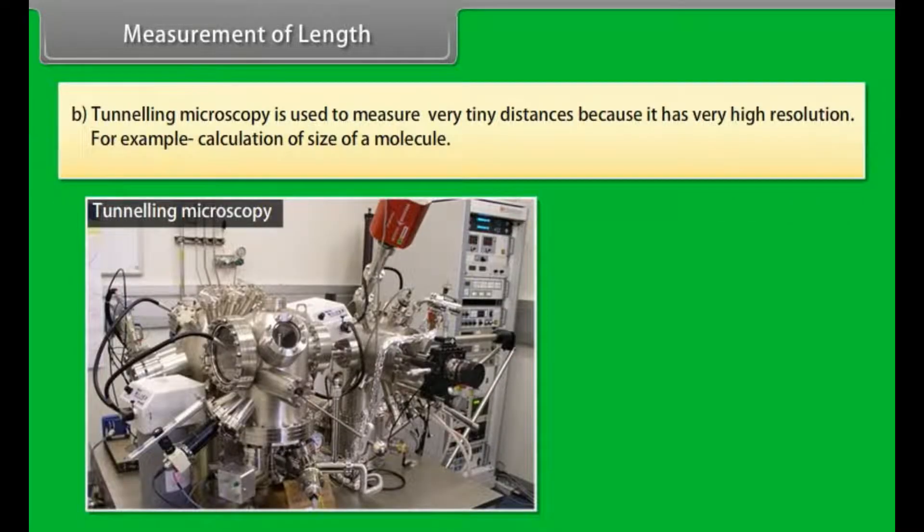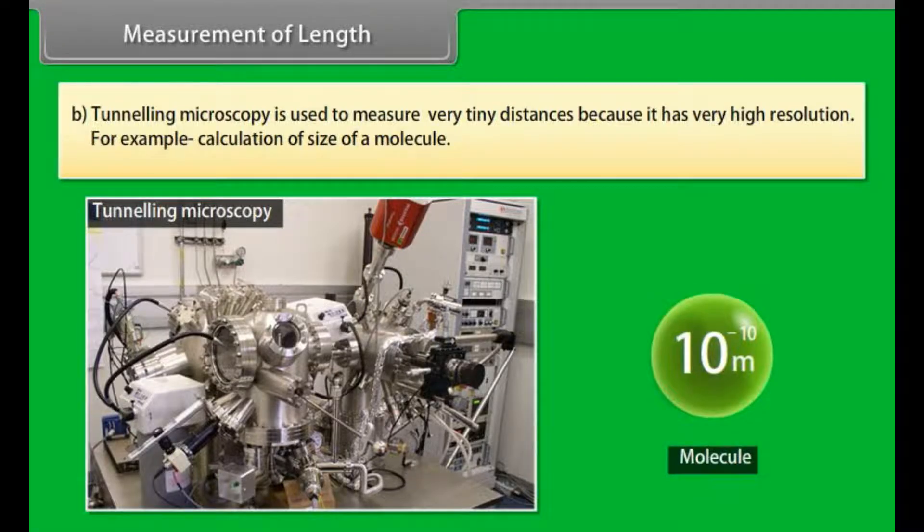Tunneling microscopy is used to measure very tiny distances because it has very high resolution, for example calculation of size of a molecule.